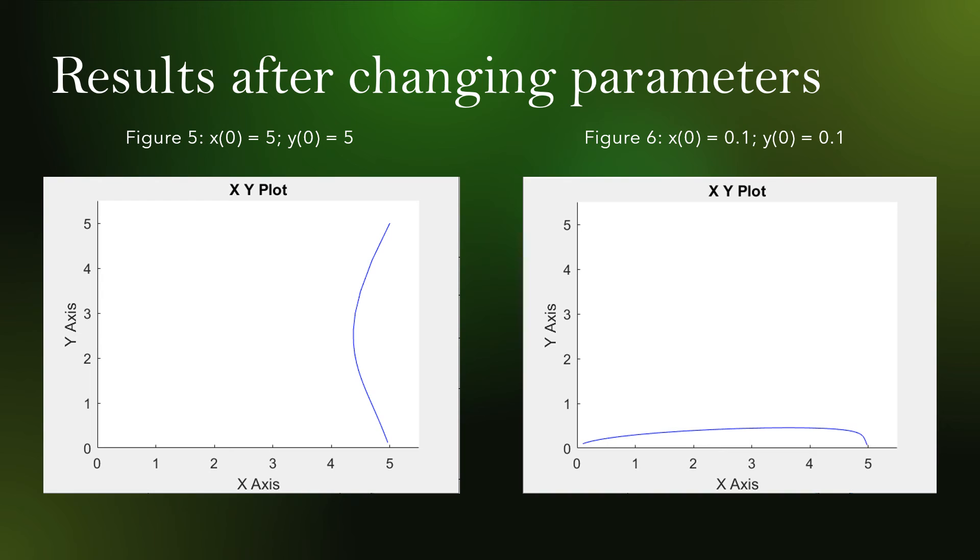These are the graphs that correlate to the changed parameters. For tribe X, the harvesting term is removed, so the coefficient in front of the XY term goes from negative to positive. And for tribe Y, there's no more cooperation term, so the coefficient in front of the XY goes from a negative value to a greater negative value. In figure 5, we see that tribe Y steadily decreases while tribe X decreases and then increases again. And then in figure 6, we see that tribe Y increases a little bit and ultimately decreases at the end, and then tribe X just increases the entire time.